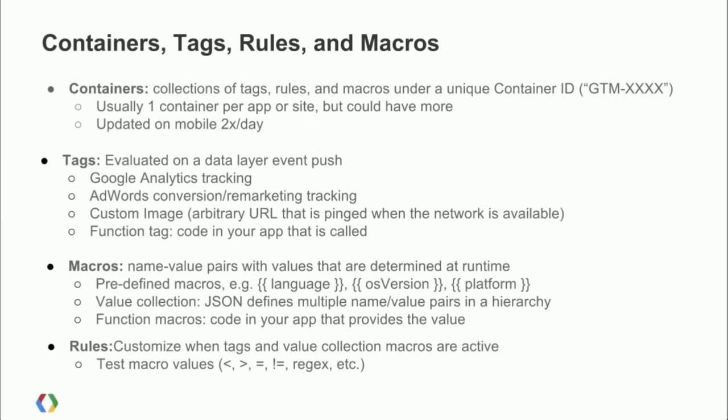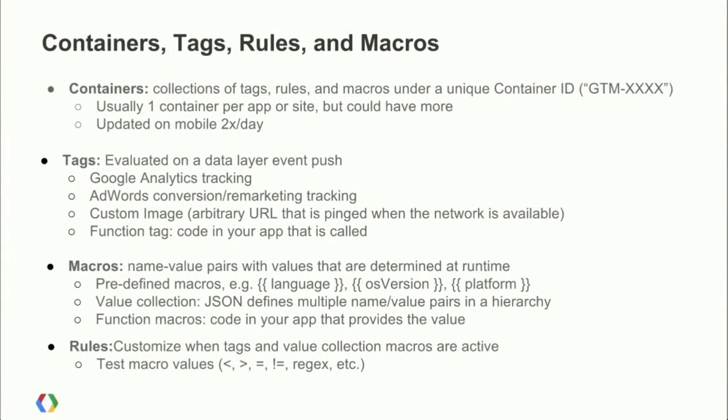For mobile, containers are updated twice a day. When your application first starts, it looks at what version of the container it has and how old it is, then goes and talks to a backend server to see whether there's a new version. If there is, it downloads it. If not, it waits 12 hours later and tries again. Tags, as mentioned, are evaluated when you push an event to the data layer — that's the only time tags ever fire. And they only fire when you've got a rule that associates a particular tag with a particular event.